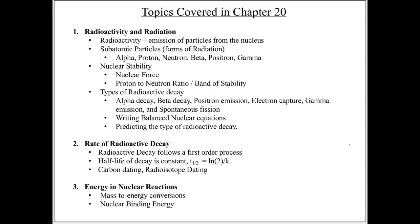The last part, which is the shortest part of this chapter but probably the most important from a practical perspective, is energy and nuclear reactions. We're going to review the Einstein relation from chapter 7, which says there's a relationship between mass and energy. When we convert mass to energy in nuclear reactions, we can get a tremendous amount of energy — this is what drives things like nuclear reactors and nuclear weapons.